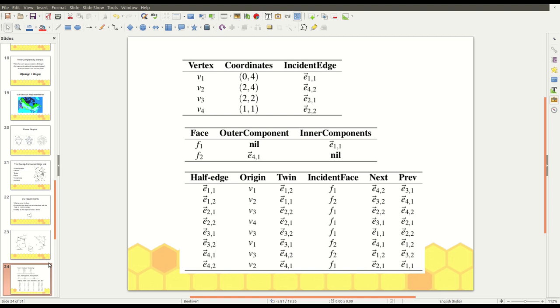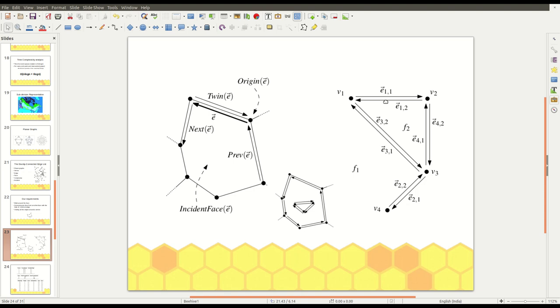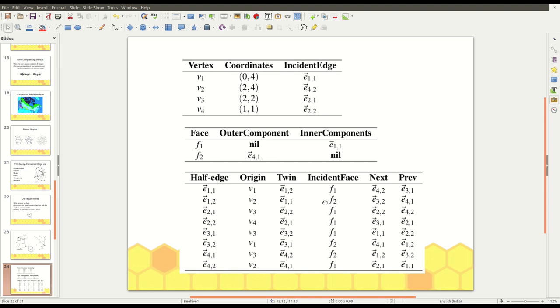So, what about f2? f2 has outer boundary and doesn't have an inner hole or anything. So, we place for inner components null. And we can place e12 or e41 or e32 in this place. We placed e41 as of now.